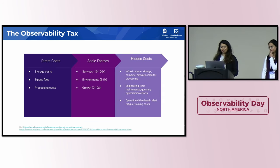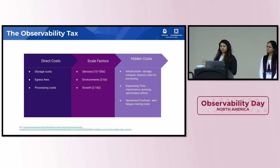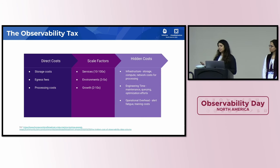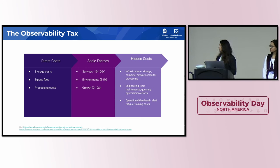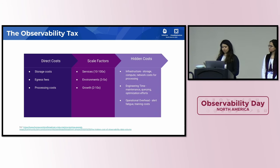You can say we are all paying the observability tax. Looking at the costs: there are direct costs — storage costs, egress fees, processing costs — and these are highly dependent on scale factors. As we increase the number of services, environments, and request volume, these directly affect your costs. There are also hidden costs: compute and network costs for processing, engineering time for querying and optimization efforts, operational overhead, training costs, and the list goes on.